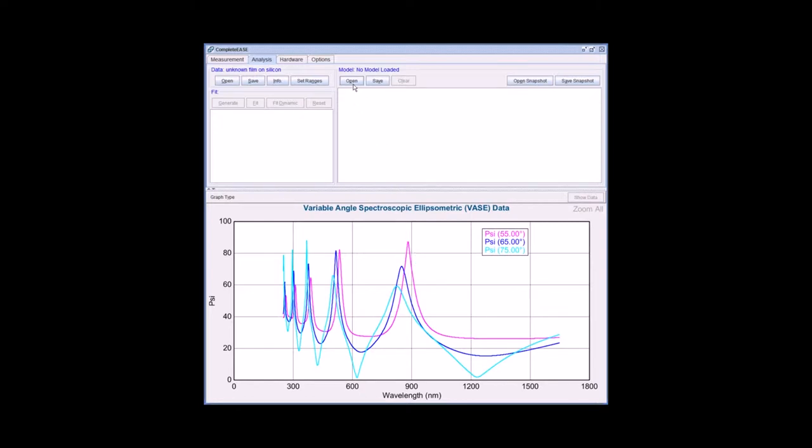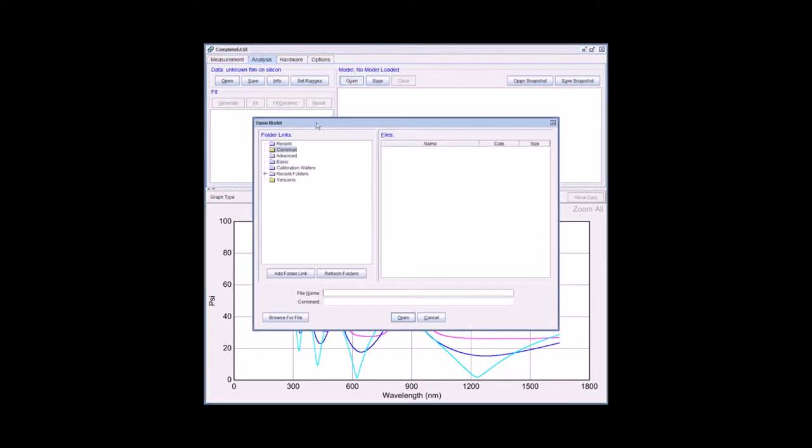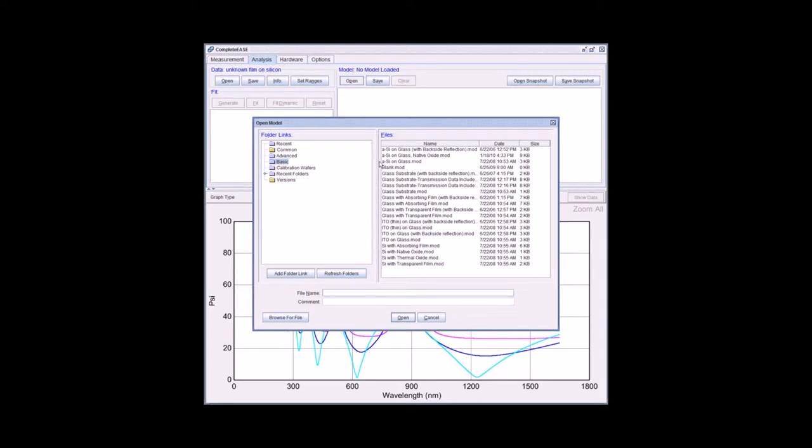First I am going to open a blank model. In the model panel, click open. In the basic folder, there is a file labeled blank.mod. This is the empty blank model.